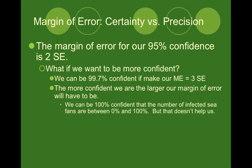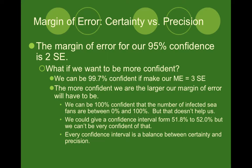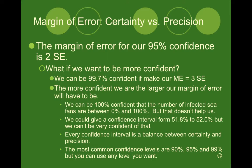We're very certain but not very precise. We could be very precise and say that the number of infected CFANS is from 51.8% to 52%, but we won't be very confident of that. The trick is to have a balance between both — we want to be as certain as possible, but also as precise as possible. So the most common confidence levels used are 90%, 95%, 98%, and 99%.